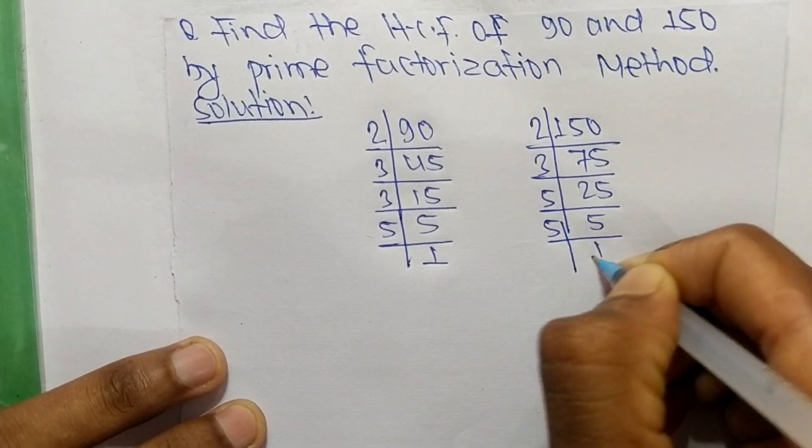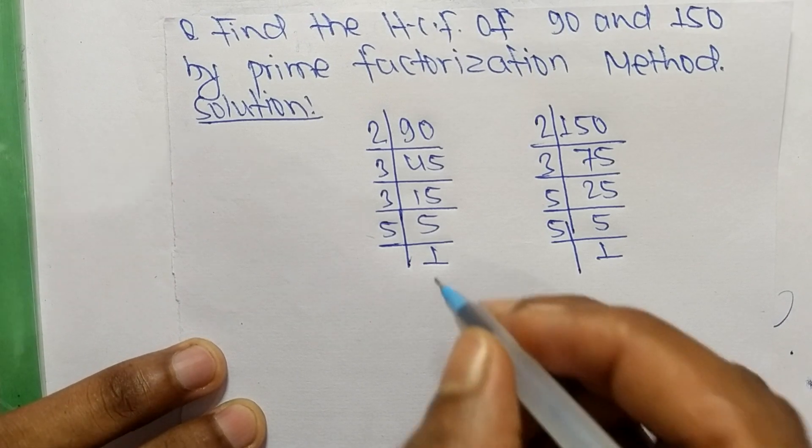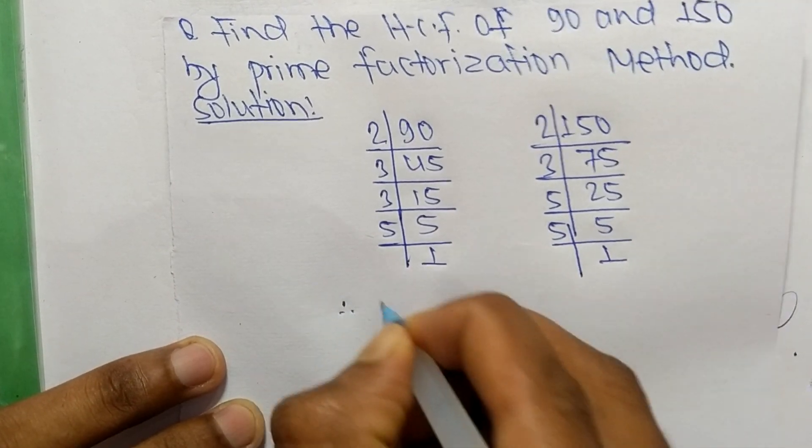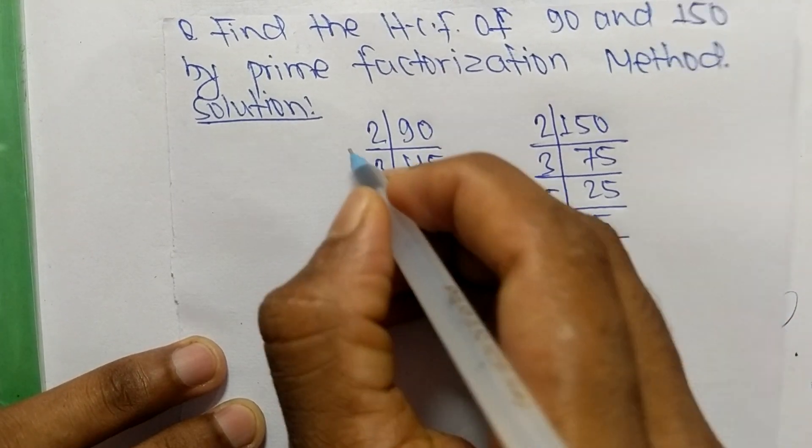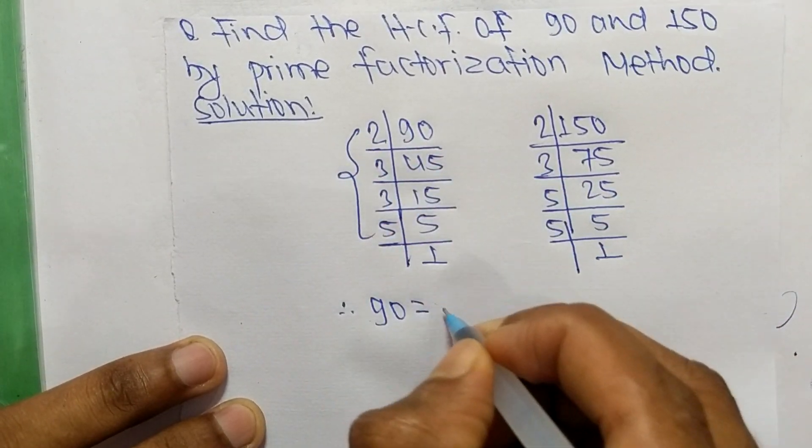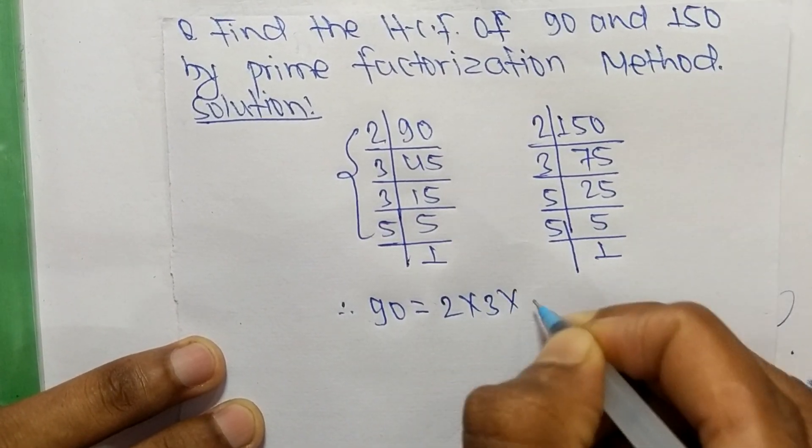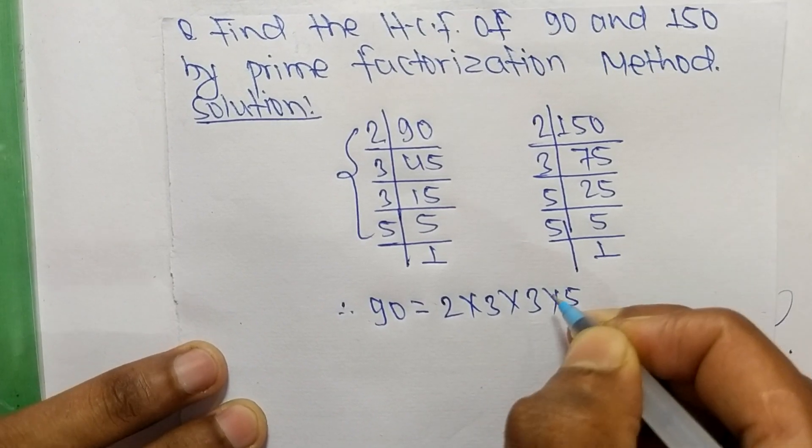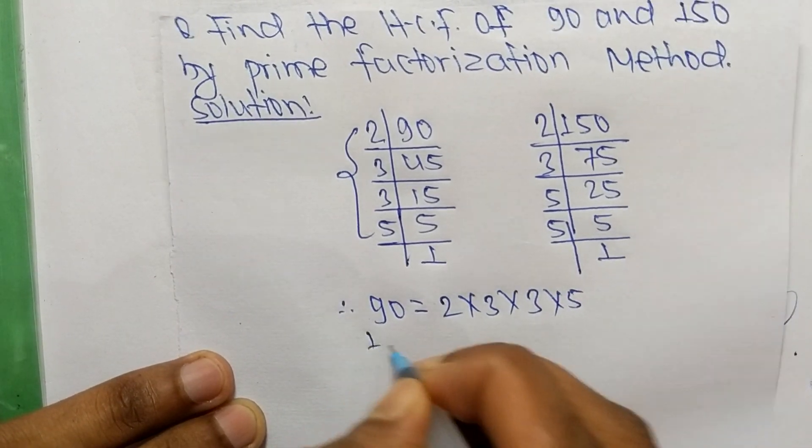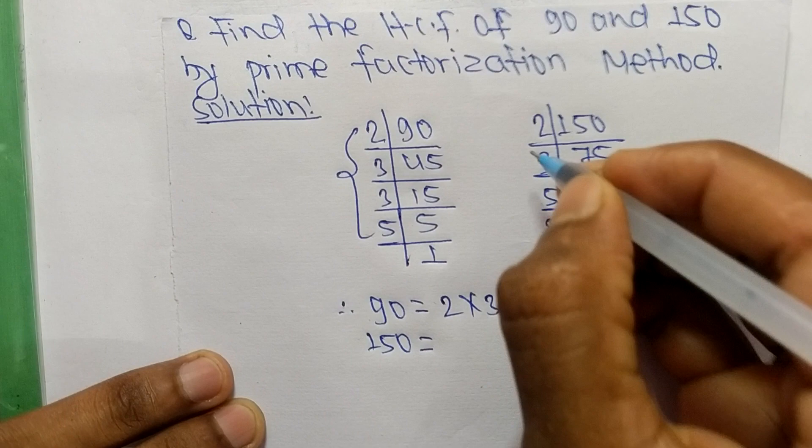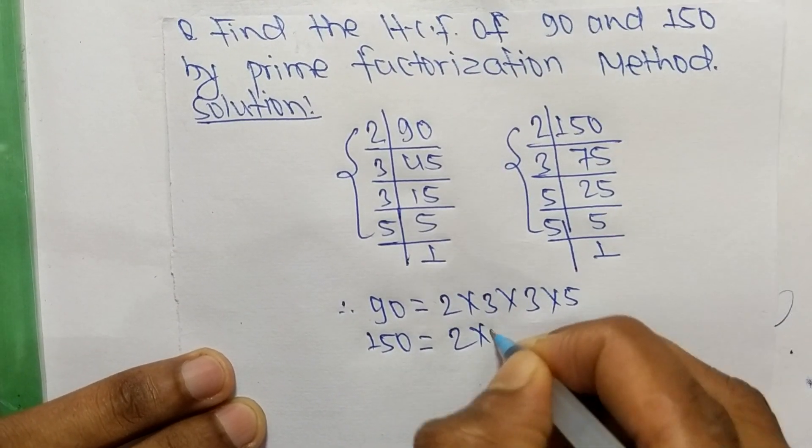So from these prime factors we can write 90 equals 2 times 3 times 3 times 5, and 150 equals 2 times 3 times 5 times 5.